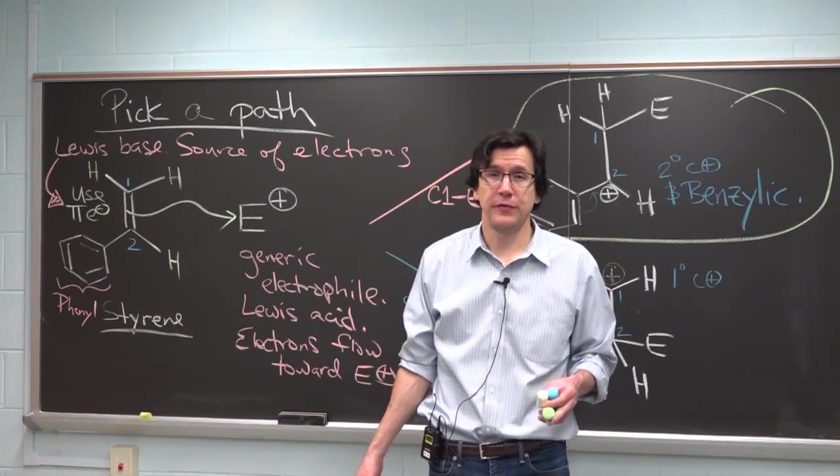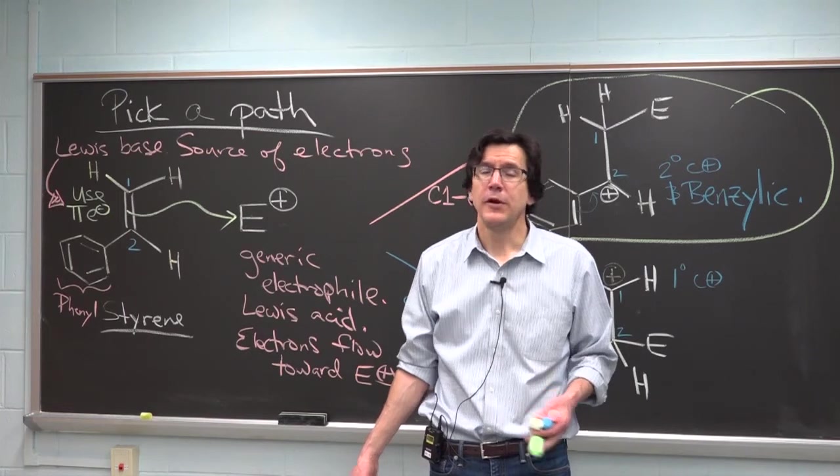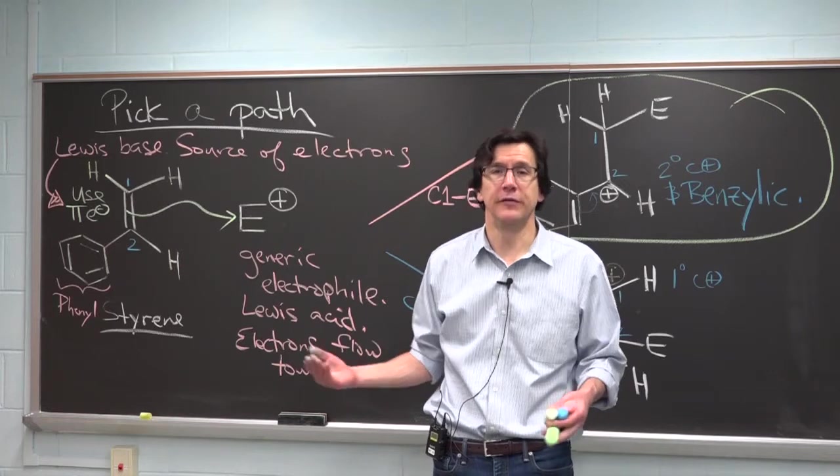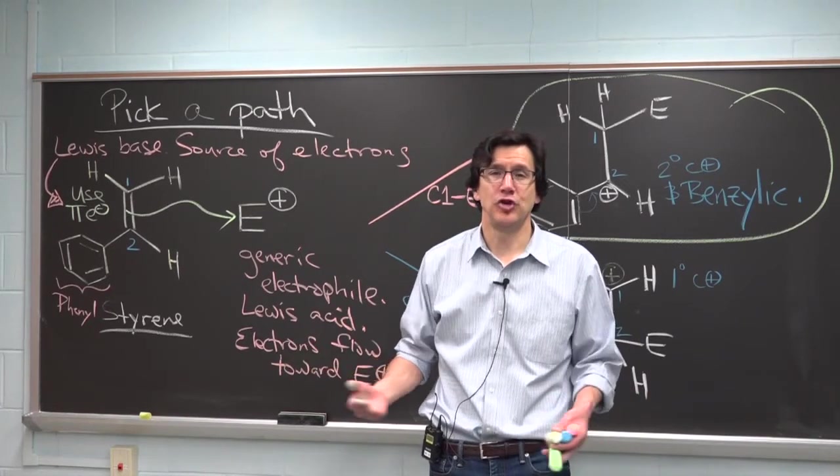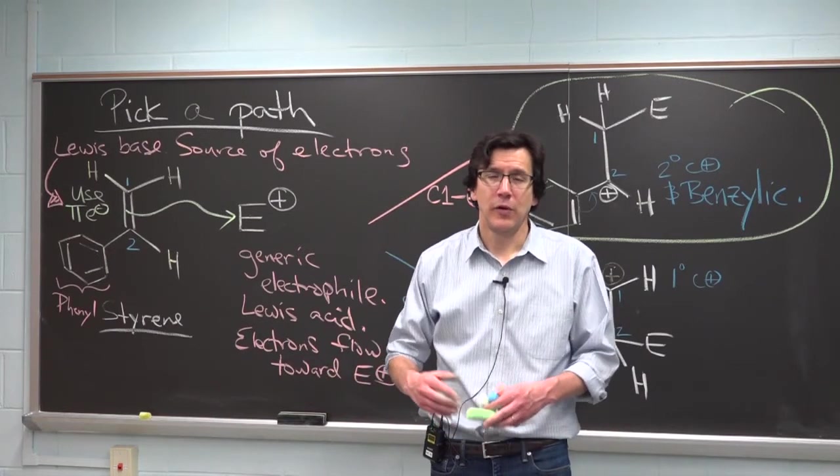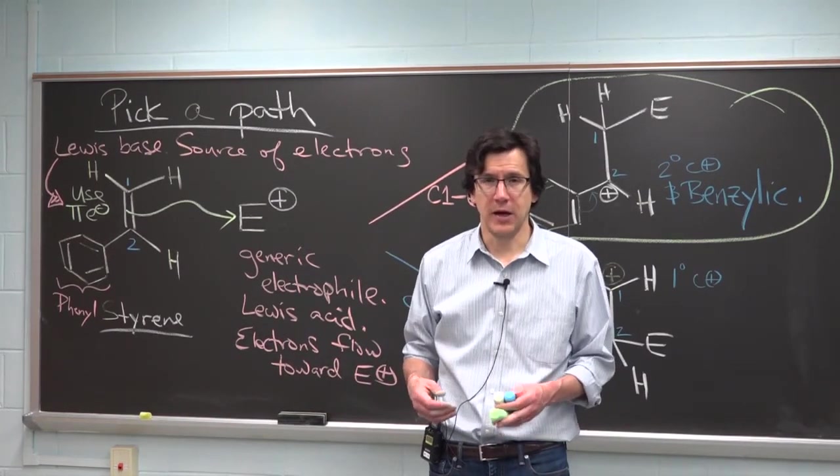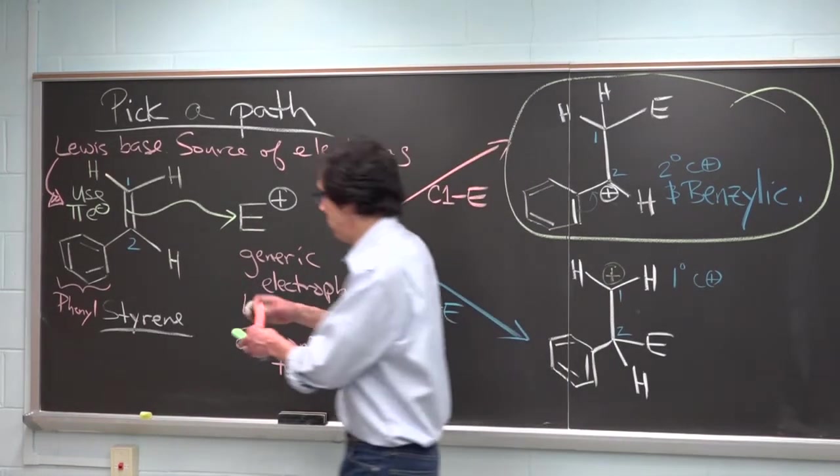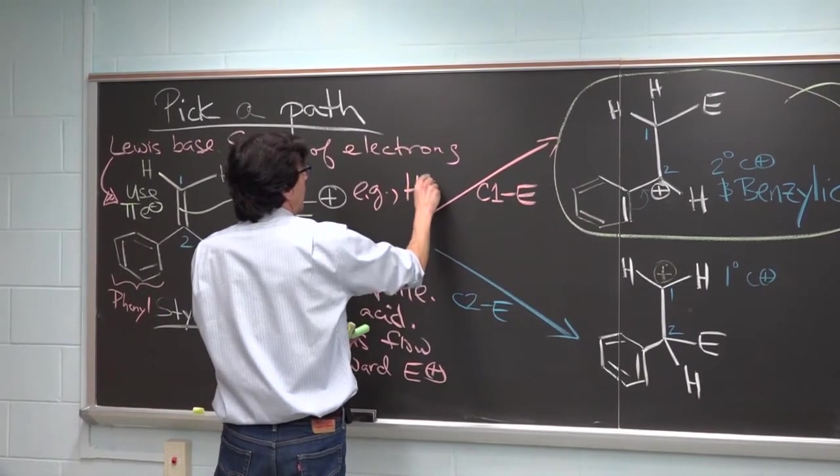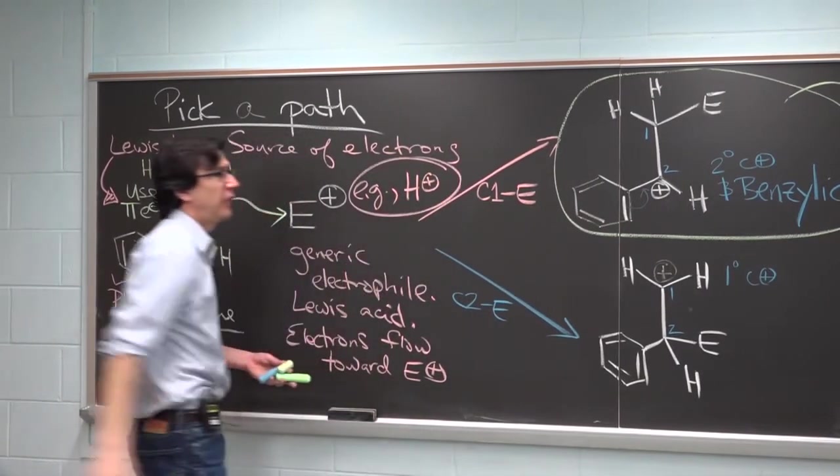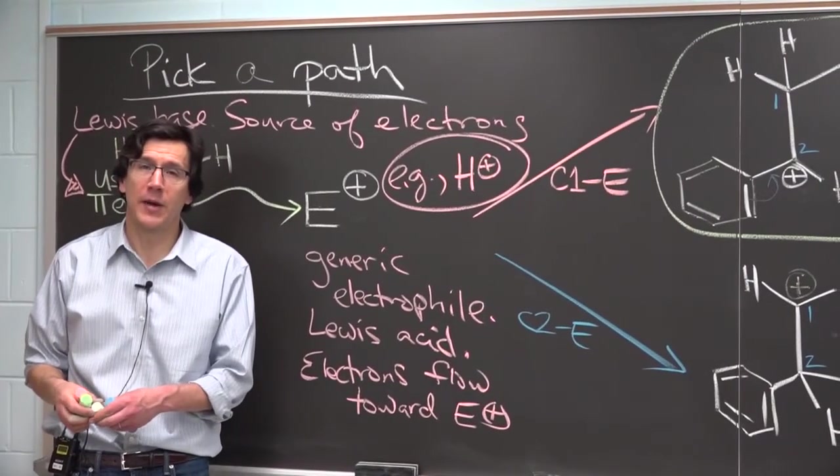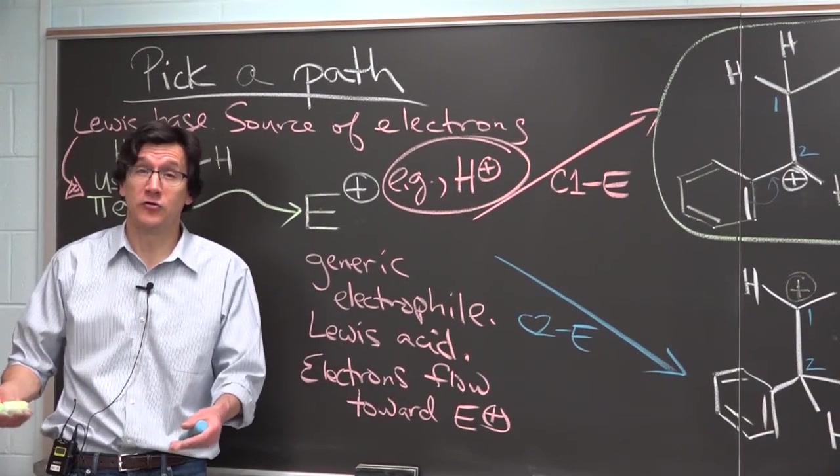The last question before we conclude here is what is the simplest electrophile, E+, that you can think of? E+ is a generic electrophile. There is no element E on the periodic table. But what's the simplest electrophile that comes to mind? The simplest electrophile is perhaps just a proton. The first class of reactions of alkenes of this sort that we will talk about is where the electrophile is just a proton.